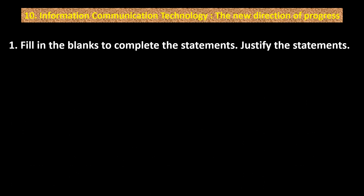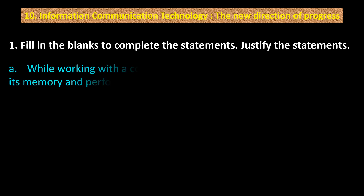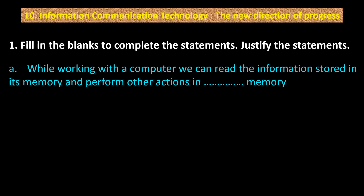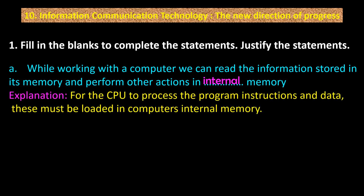Question number one: fill in the blanks to complete the statements and justify the statements. Point A: While working with a computer, we can read the information stored in its memory and perform other actions in internal memory. Explanation: For the CPU to process the program instructions and data, this must be loaded in the computer's internal memory.